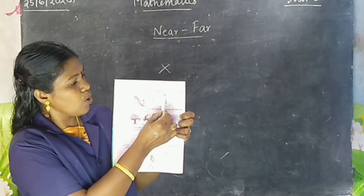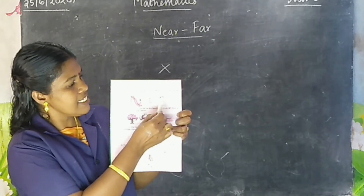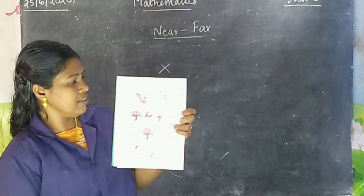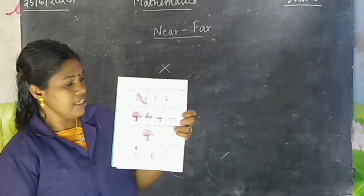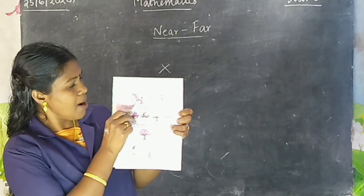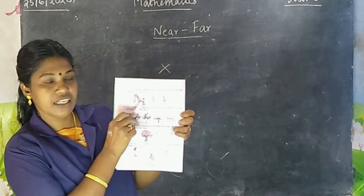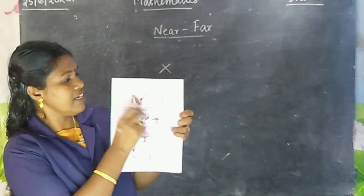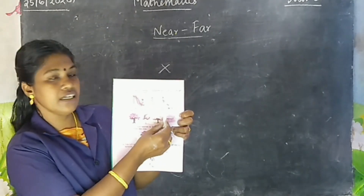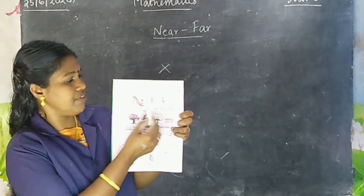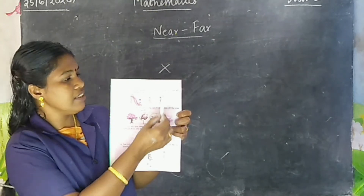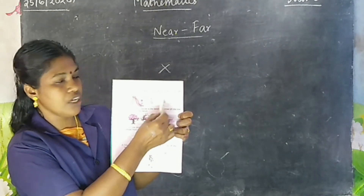Therefore, cross out this girl who is farthest. This girl is nearest, therefore tick her. And this girl is farthest from the slide, therefore cross out.